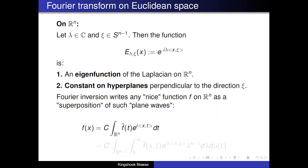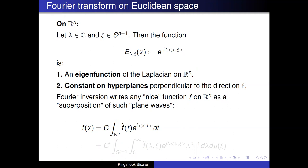Fourier inversion in Rⁿ writes any nice function f on Rⁿ as a superposition of such plane waves. The Fourier transform f̂ of a suitably nice function f—for example in L¹ ∩ L² of Rⁿ—is well defined, and we have the Fourier inversion formula: f(x) equals a constant times the integral over Rⁿ of f̂(t) e^{ixt} dt.